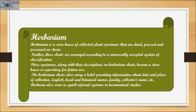Most herbaria utilize a standard system of organizing their specimens into herbarium cases. Specimen sheets are stacked in groups by the species to which they belong and placed in a large, lightweight folder labeled on the bottom edge. Groups of specimen folders are then placed together into larger, heavier folders by genus. The genus folders are then sorted by taxonomic family according to the standard system selected for use by the herbarium and placed into pigeonholes in herbarium cabinets.